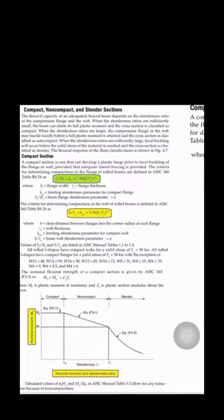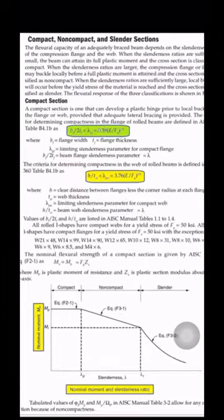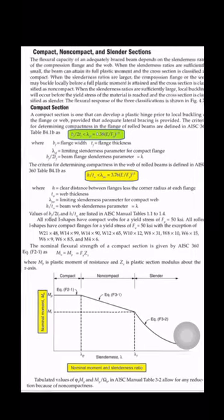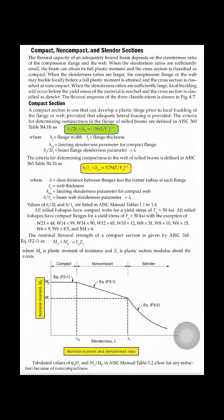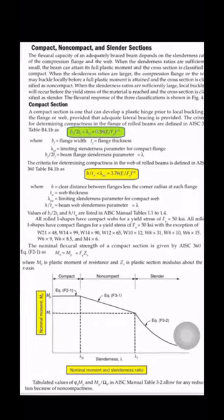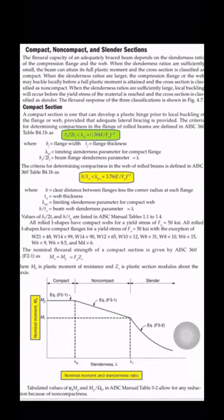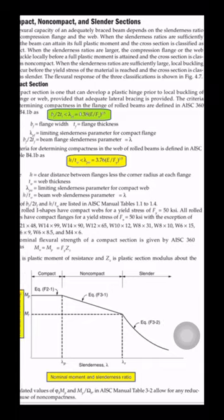Let's discuss compact, non-compact, and slender sections. The flexural capacity of adequately braced beams depends on the slenderness ratio of the compression flange and web. When the slenderness ratios are sufficiently small, then the beam can attain full plastic moment and the cross section is classified as compact.